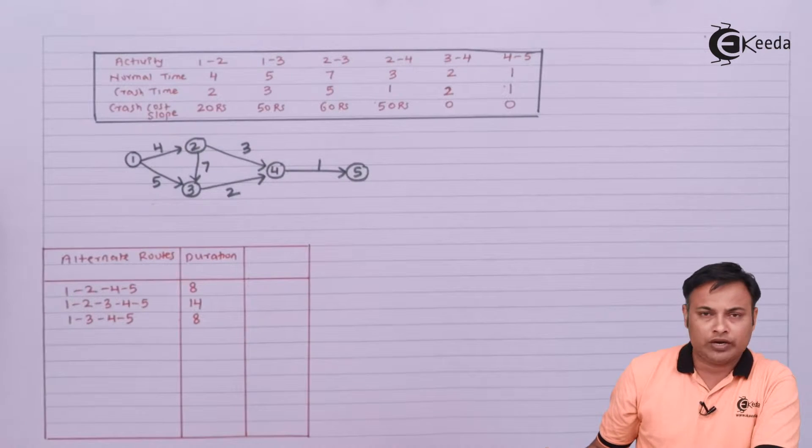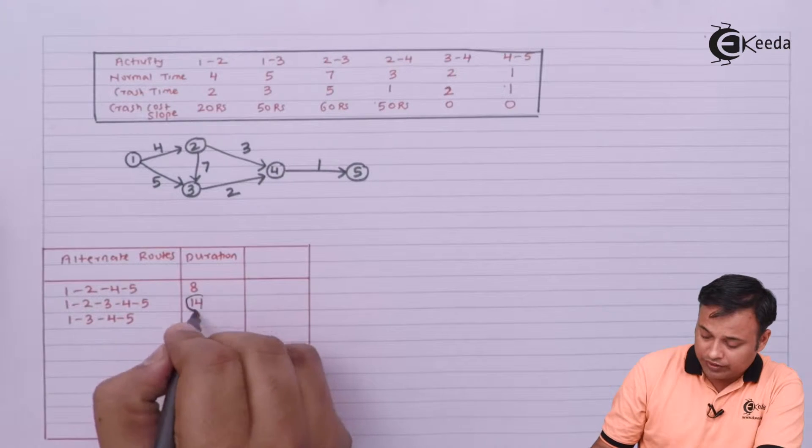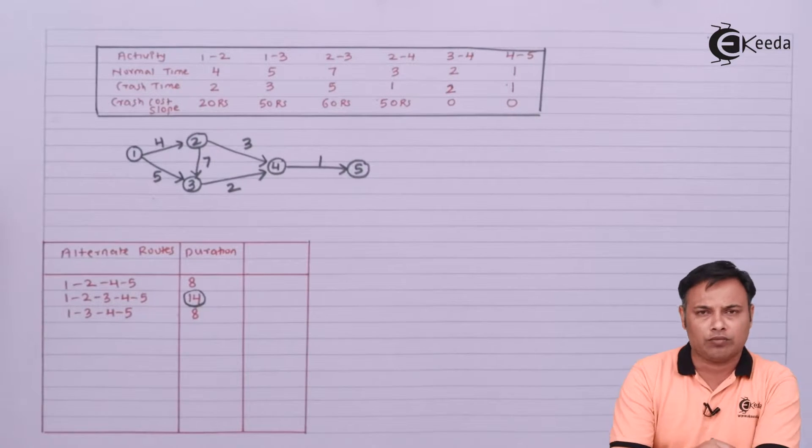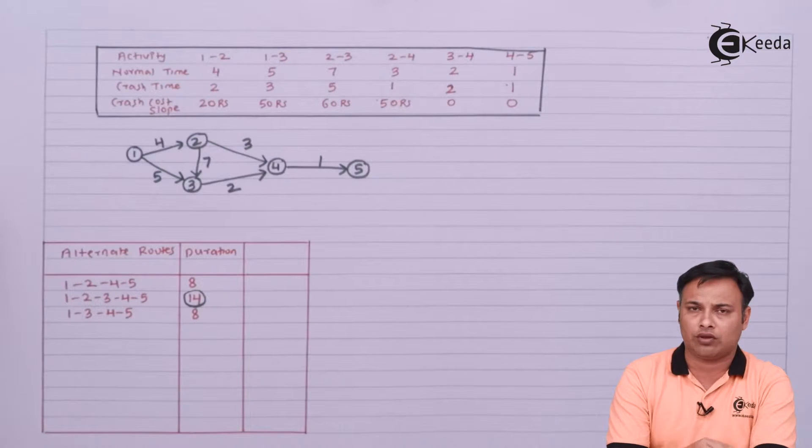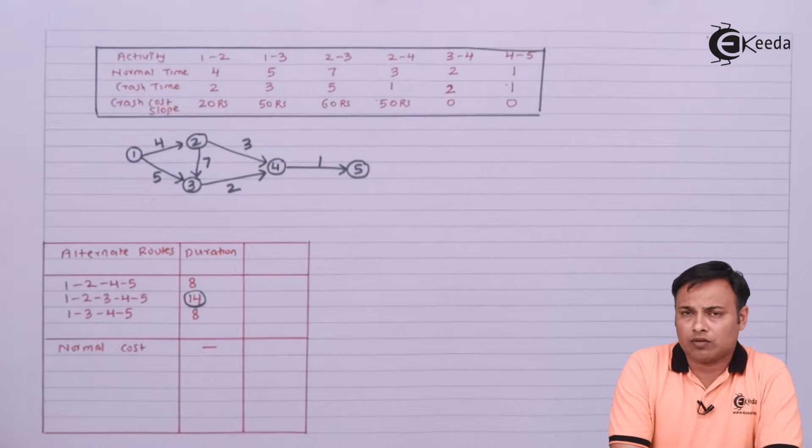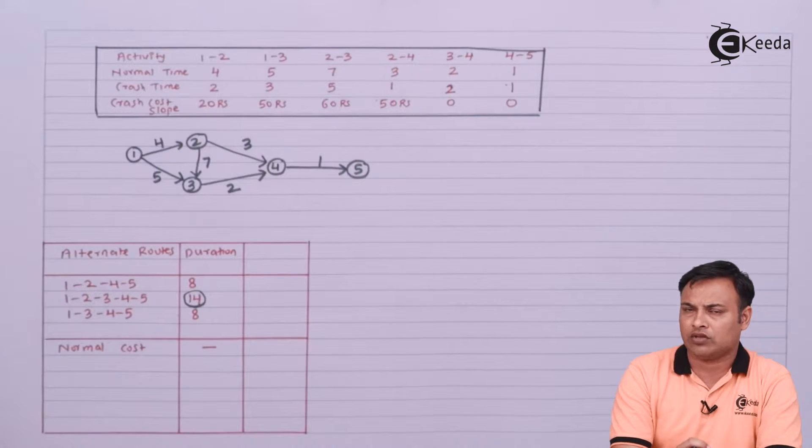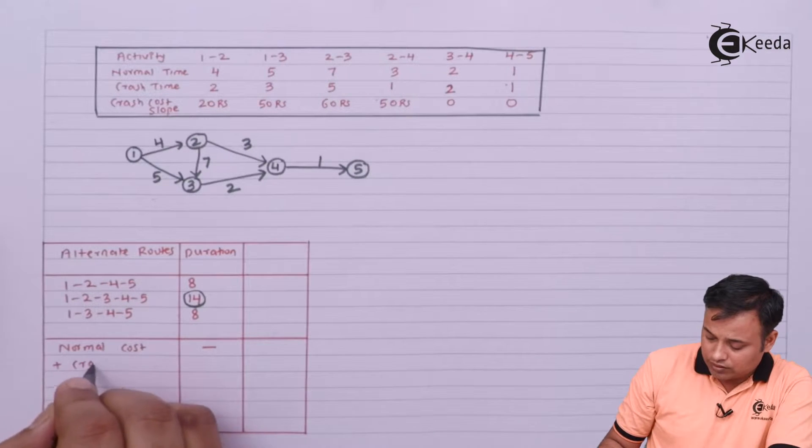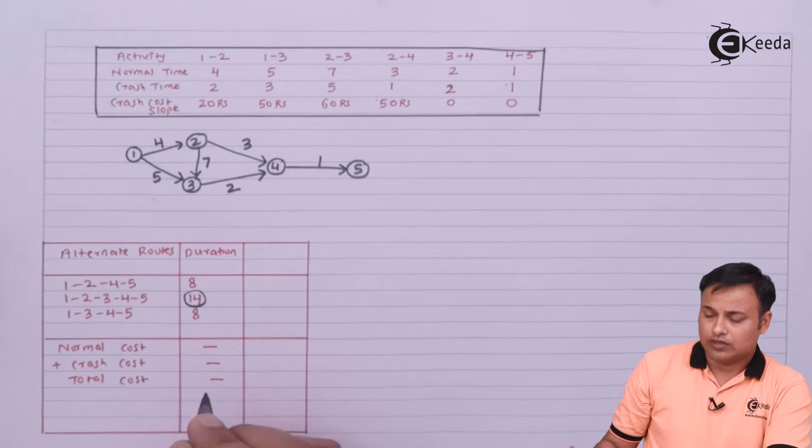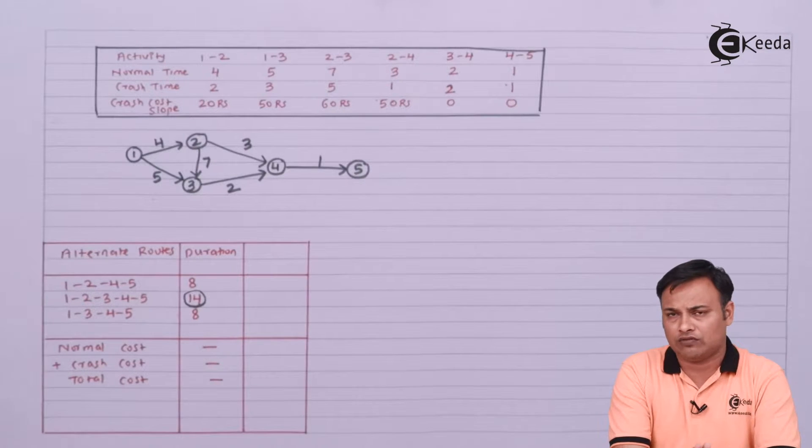So we have 1-2-3-4-5 with a duration of 14 as the critical path. My normal cost is not given in the problem. If it is not given in the problem, we can simply ignore the calculation of normal cost. We can always work only on the calculation of crash cost. Since I am not given the normal cost, I will put a dash against it.